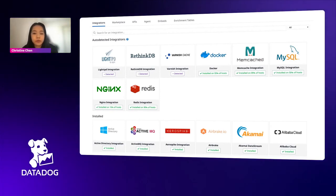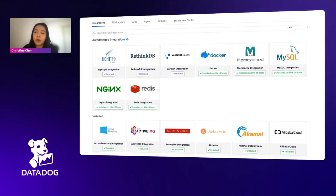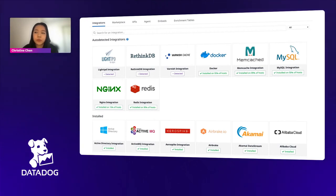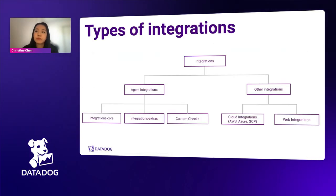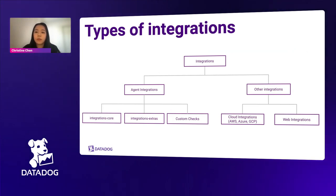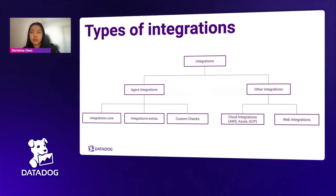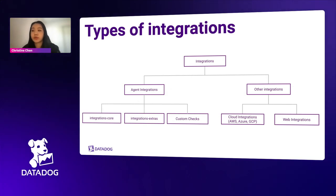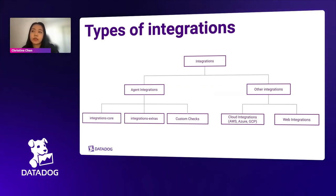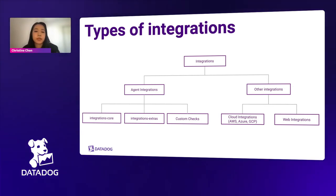We have a couple of ways of configuring integrations in Datadog. One way is through the agent. Alternatively, we have crawlers or library-based integrations that can be installed from this page. On the left side for other integrations, we see cloud and web integrations — these are the authentication-based, or crawler-based, integrations configured within the Datadog application by providing credentials for obtaining metrics from an API. Examples would be Slack, AWS, and Azure.